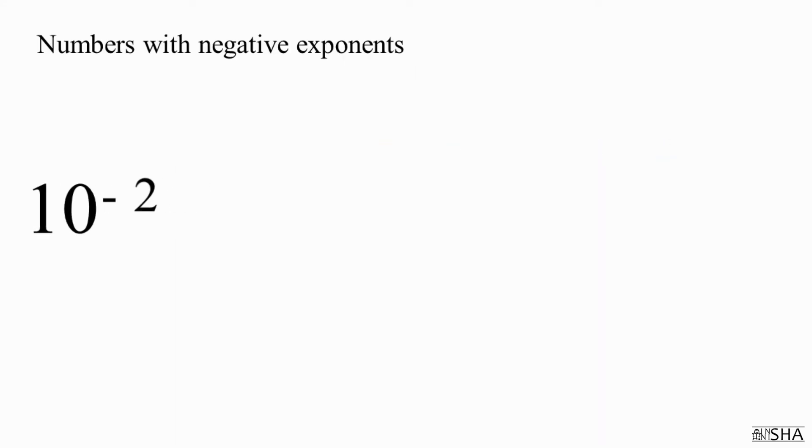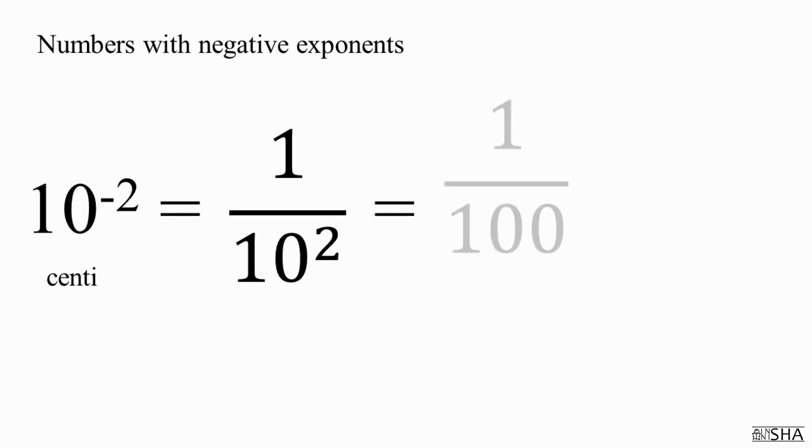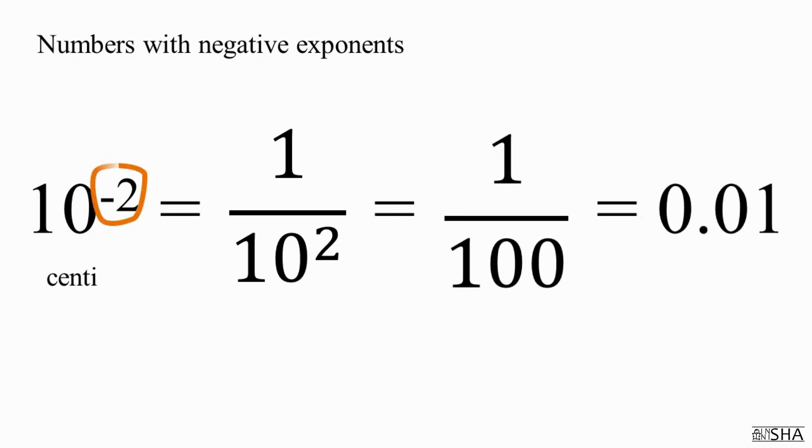Numbers with negative exponents can be written using fractions or decimals. For example, let's take a look at the factor of the prefix centi: ten to the negative two power. It is one divided by ten to the second power, and it is the same as one divided by one hundred, which is point zero one.